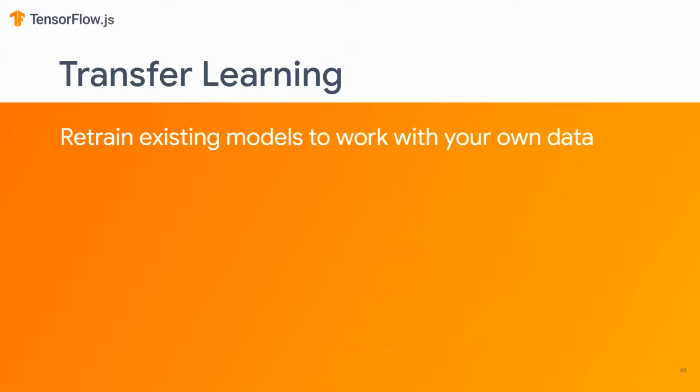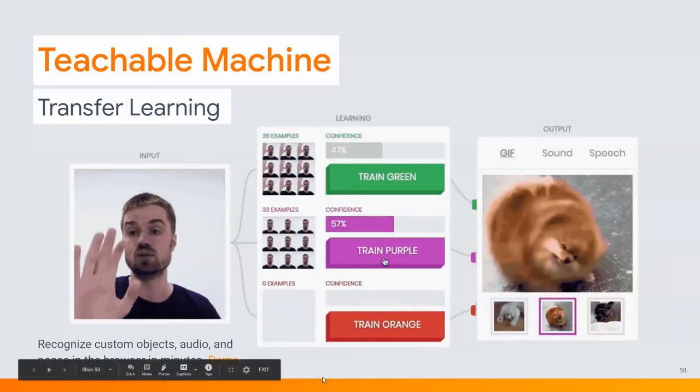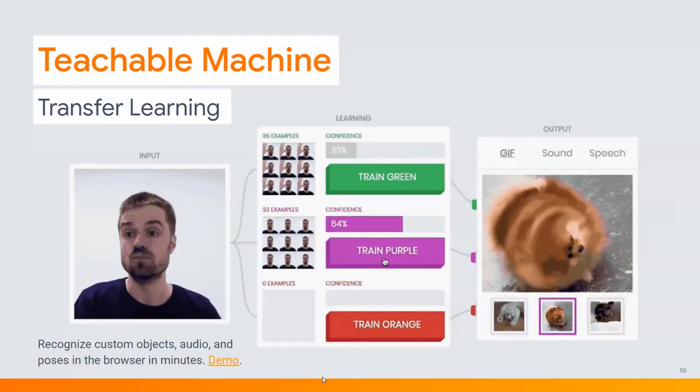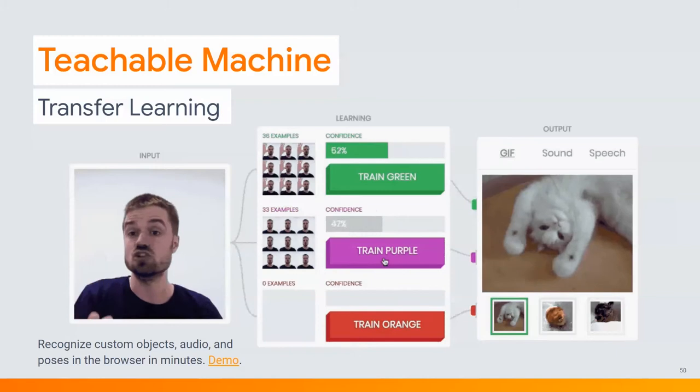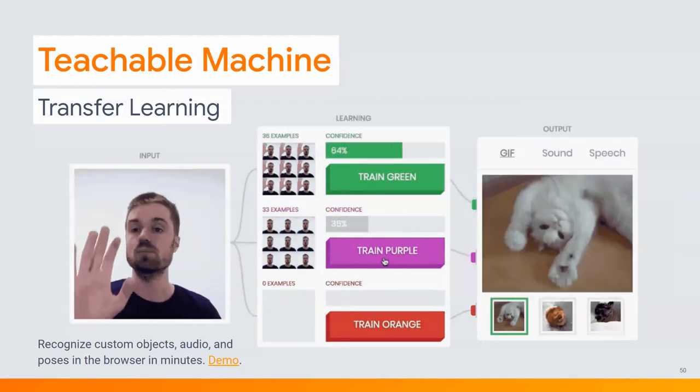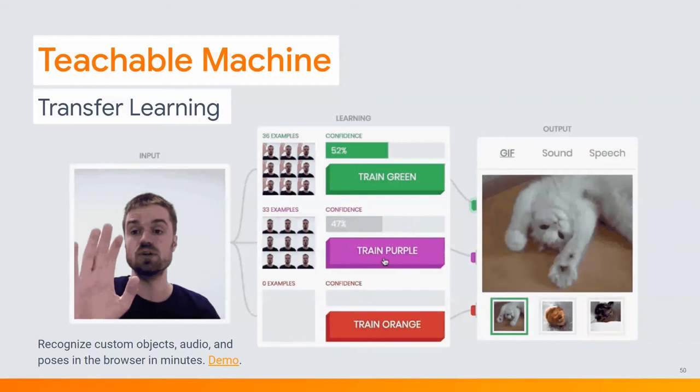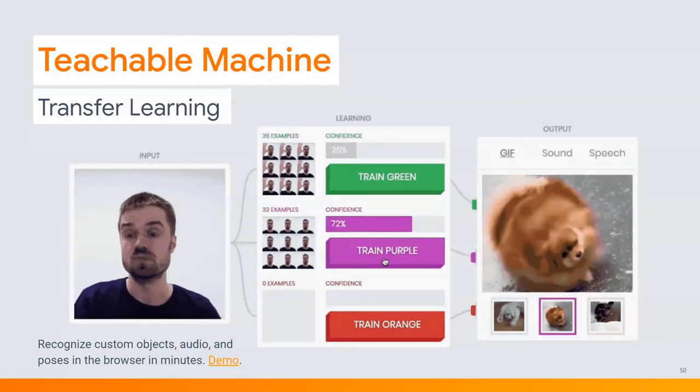The next way to use TensorFlow.js is via transfer learning — retraining existing models to work with your own data. This is the next logical step after using pre-trained models to make things more customized. I want to show two ways to do this in a super simple fashion. The first one is Teachable Machine — a website created by Google that allows you to retrain data in the web browser for common tasks like recognizing an object, speech recognition, or pose estimation. In just a few clicks, you can make your own ML model.